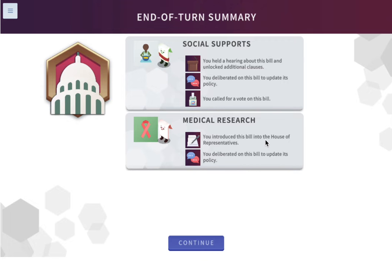Our end-of-term summary: for the social supports bill, we held a hearing, unlocked additional clauses, deliberated, and voted. For the medical research bill, we introduced it into the House and deliberated to update its policy.